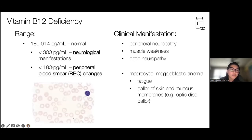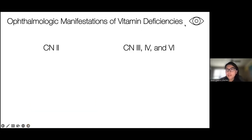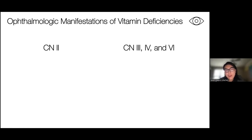Below 180, we see macrocytic megaloblastic anemia with accompanying fatigue and pallor, glossitis with that smooth beefy red tongue, nausea, vomiting, diarrhea, loss of appetite, and weight loss. It's also important to remember how ophthalmologic manifestations of vitamin deficiencies present. I'll focus on B12 and B1, but vitamin A is also a major component of ophthalmologic manifestations of vitamin deficiencies.